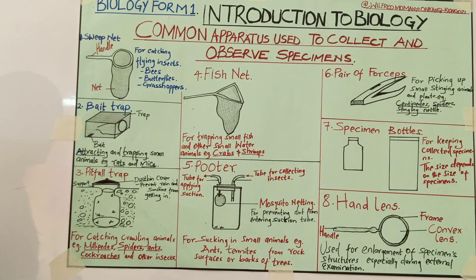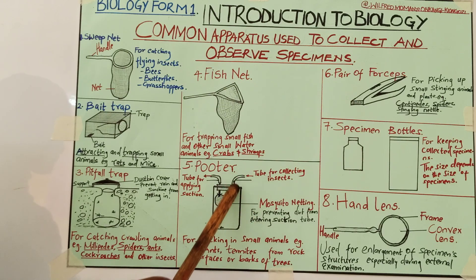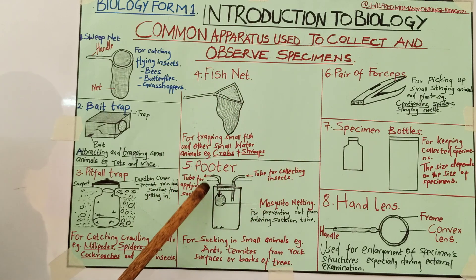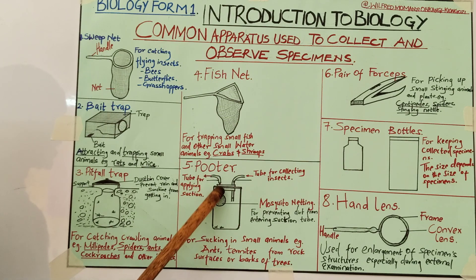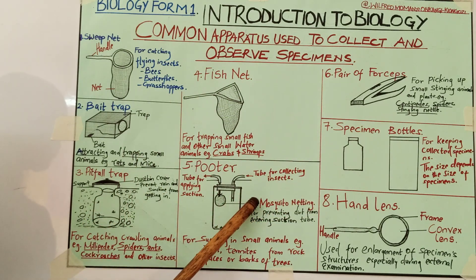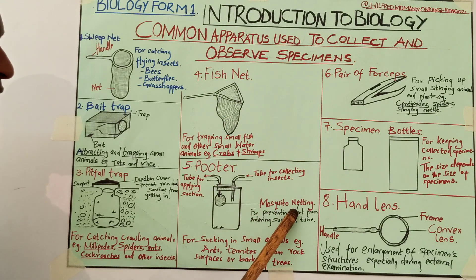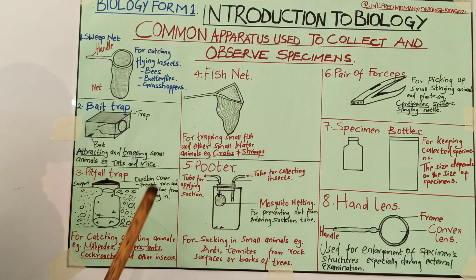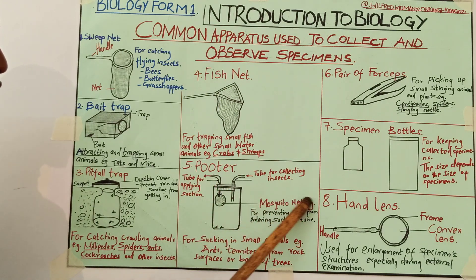Let us look at the parts of a pooter. A pooter has two tubes. The first tube is for collecting the insects, on the right-hand side. The second tube is for application of suction. Suction is applied at the end of that tube. Inside the container there is what we call the mosquito netting, whose function is to prevent dust from entering the suction tube.